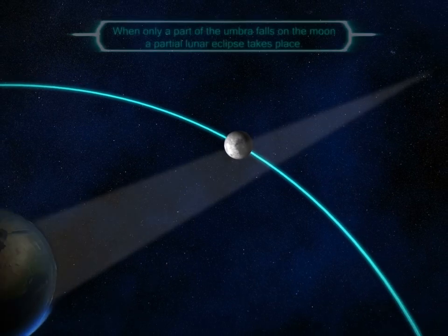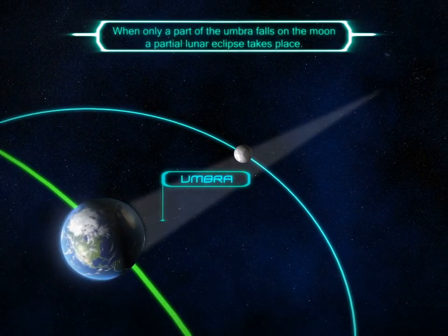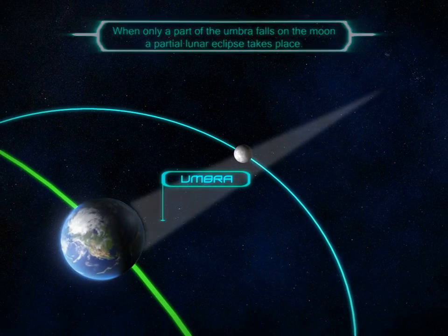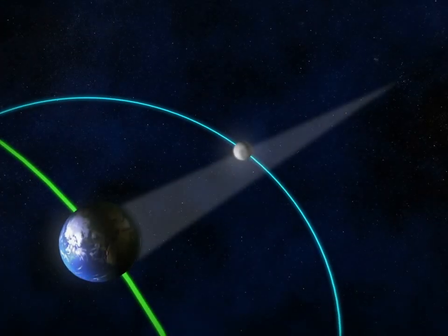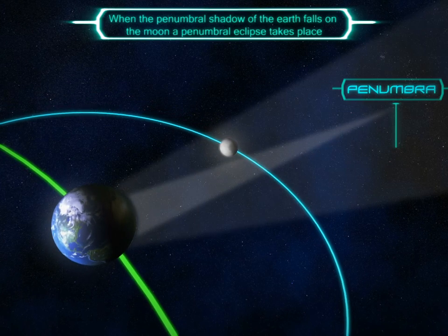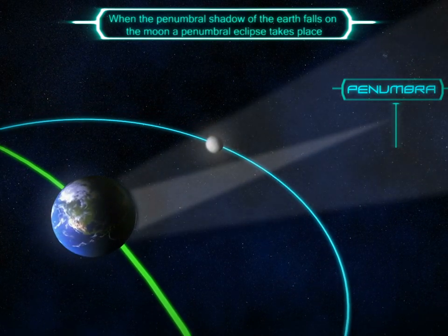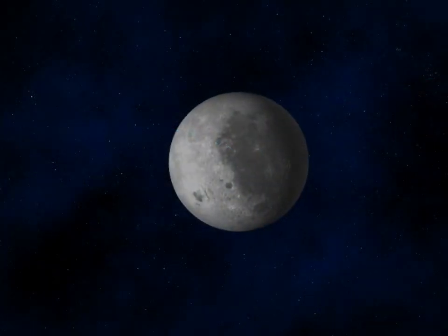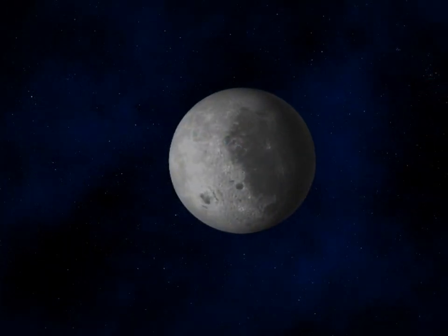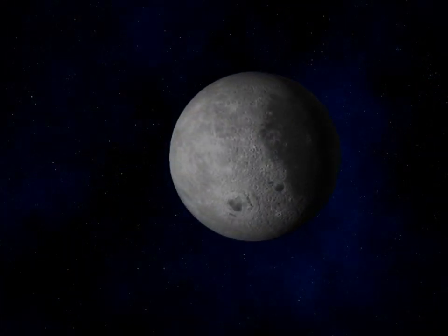When only a part of the umbra falls on the moon, a partial lunar eclipse takes place. When the penumbral shadow of the earth falls on the moon, a penumbral eclipse takes place, causing a slight darkening on the moon's surface.